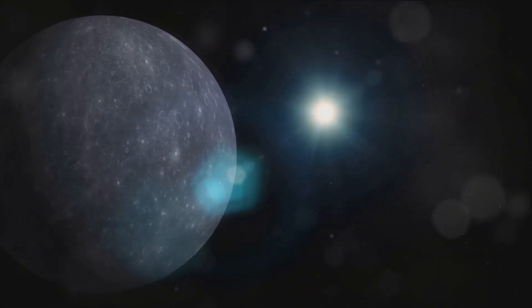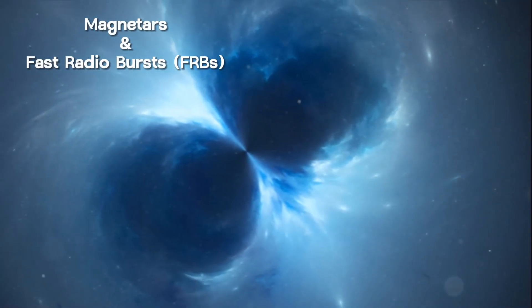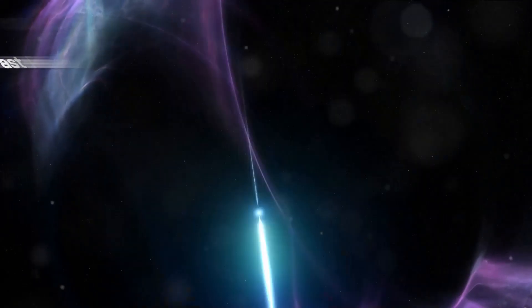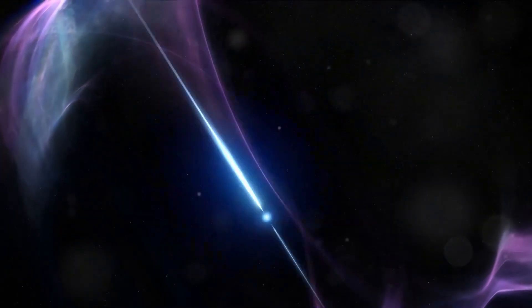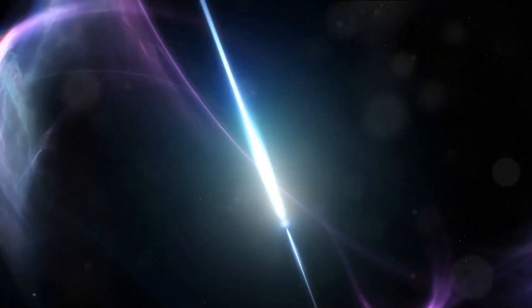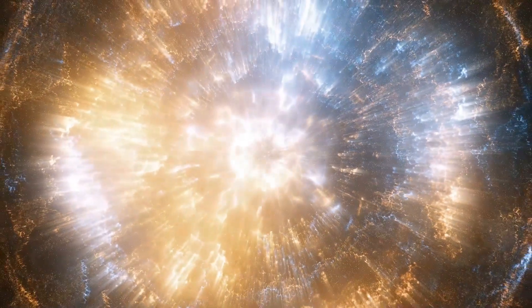Fast forward to the 2010s and magnetars found themselves at the center of another mystery. A new hypothesis emerged proposing a link between these magnetars and fast radio bursts, or FRBs for short. These FRBs are millisecond-long bursts of radio waves in space, releasing energy equivalent to the sun's annual output. And yet, their origins continue to baffle scientists.